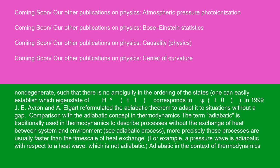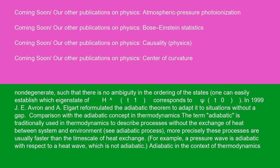Comparison with the adiabatic concept in thermodynamics: the term 'adiabatic' is traditionally used in thermodynamics to describe processes without the exchange of heat between system and environment. More precisely, these processes are usually faster than the timescale of heat exchange. For example, a pressure wave is adiabatic with respect to a heat wave, which is not adiabatic. Adiabatic in the context of thermodynamics is often used as a synonym for 'fast process.' The classical and quantum mechanics definition is instead closer to the thermodynamic concept of a quasistatic process — processes that are almost always at equilibrium, slower than the internal energy exchange interaction timescales.